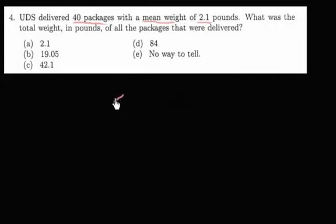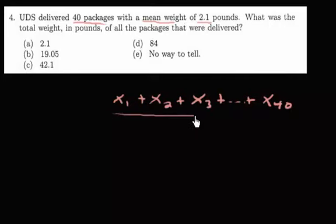So the mean would be x1 plus x2 plus x3, all the way out to the 40th package. And when you divide by 40, you're going to get 2.1 pounds.